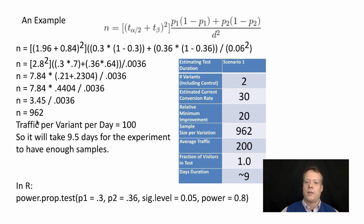That's how we get that number, and you can do that for the other calculations to get the numbers out exactly. We also know the traffic per variant per day is 100. This calculation gives us the sample size per variant, so it takes us nine and a half days for the experiment to have enough samples.